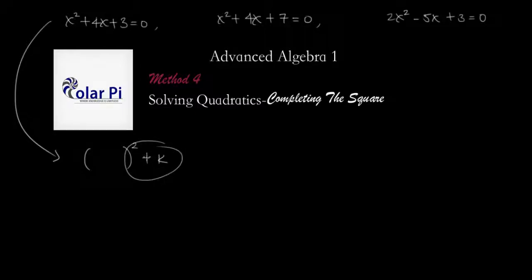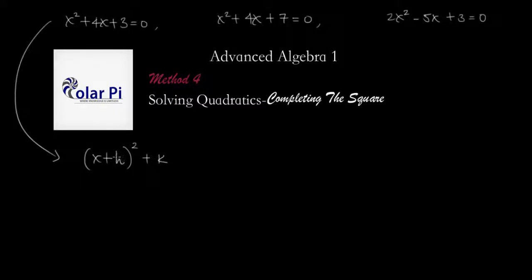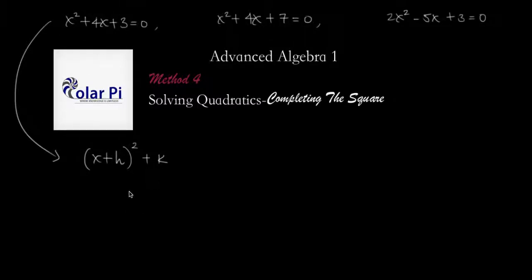We want to write some quantity squared, and then plus or minus a number — let's write plus k, and allow for k to be a negative number. That way we have minus some number when k is negative. What goes inside this thing? Definitely an x, and then plus h. So if h is negative, say h is negative three, this will read x minus three inside the parentheses, then x minus three quantity squared, plus some leftover.